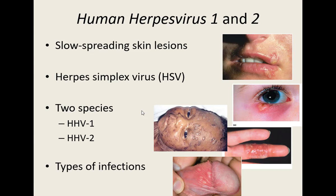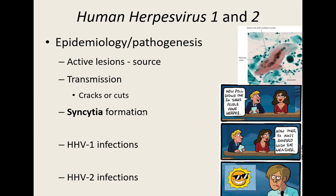Those active lesions are where the virus is actively shedding — they're the infection source. If you have a lesion on your finger, anything you touch you're laying viruses down. In healthcare settings, if you have a whitlow you need gloves on the entire time you work. Depending on where those lesions are determines the type of infection, but it's still all from HHV-1 and HHV-2.